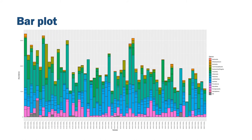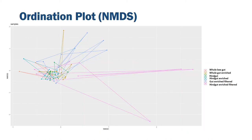We also get plots showing the microbial communities of each of the samples, as well as ordination plots showing the differences in microbiome composition between the different sample types that we are studying.